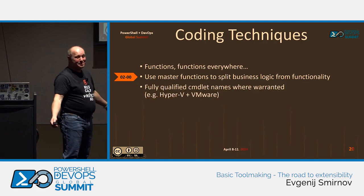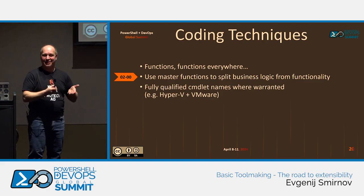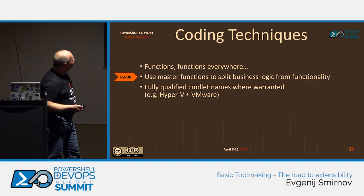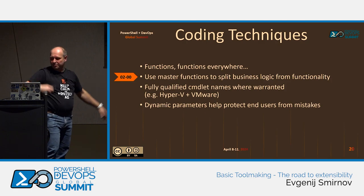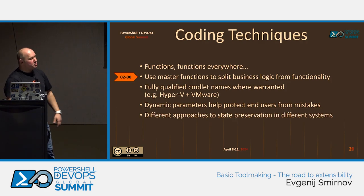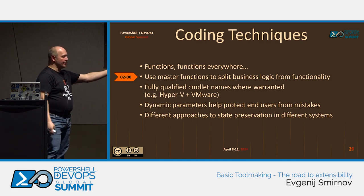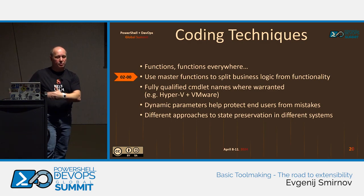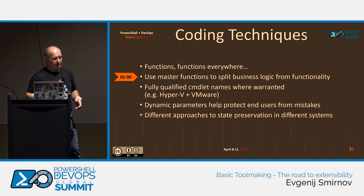Use fully qualified cmdlet names where warranted by the underlying technology. VMware and Hyper-V is the best example — both have Get-VM, so whichever got loaded first wins. Use usefully qualified names where you expect overlaps. Dynamic parameters again protect users from making mistakes calling your tool as it grows in functionality, protocols, and targets. And state preservation — again Hyper-V versus VMware is a good example. With Hyper-V you just shoot cmdlets against the Hyper-V host, but with VMware or SQL for instance you have to establish a connection and reuse it. You might want to have a way to transport state across separate functions in your module.